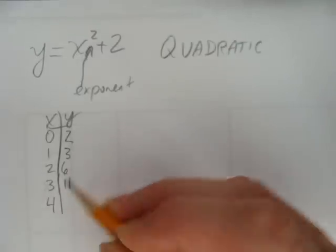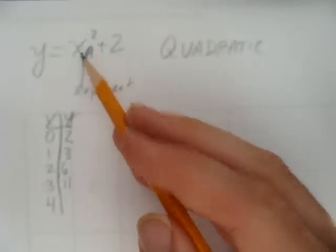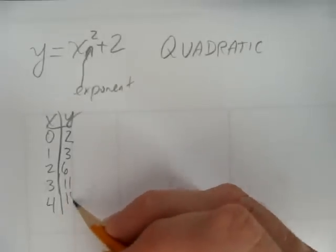Let's do one more just to see what happens. 4 squared, 4 times 4, 16, plus 2, 18.